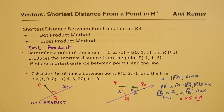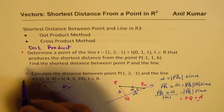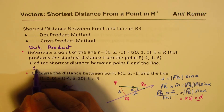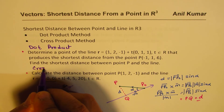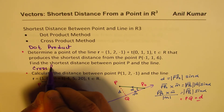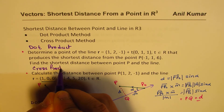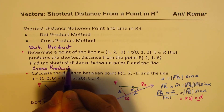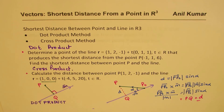We are going to use the cross product for our second example. And we'll see how to apply both these methods to find the shortest distance.